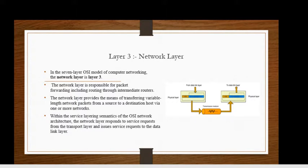The third layer is the network layer. This layer is responsible for packet forwarding including routing through intermediate routers. It also provides the means of transferring variable-length network packets from a source to a destination host via one or more networks.